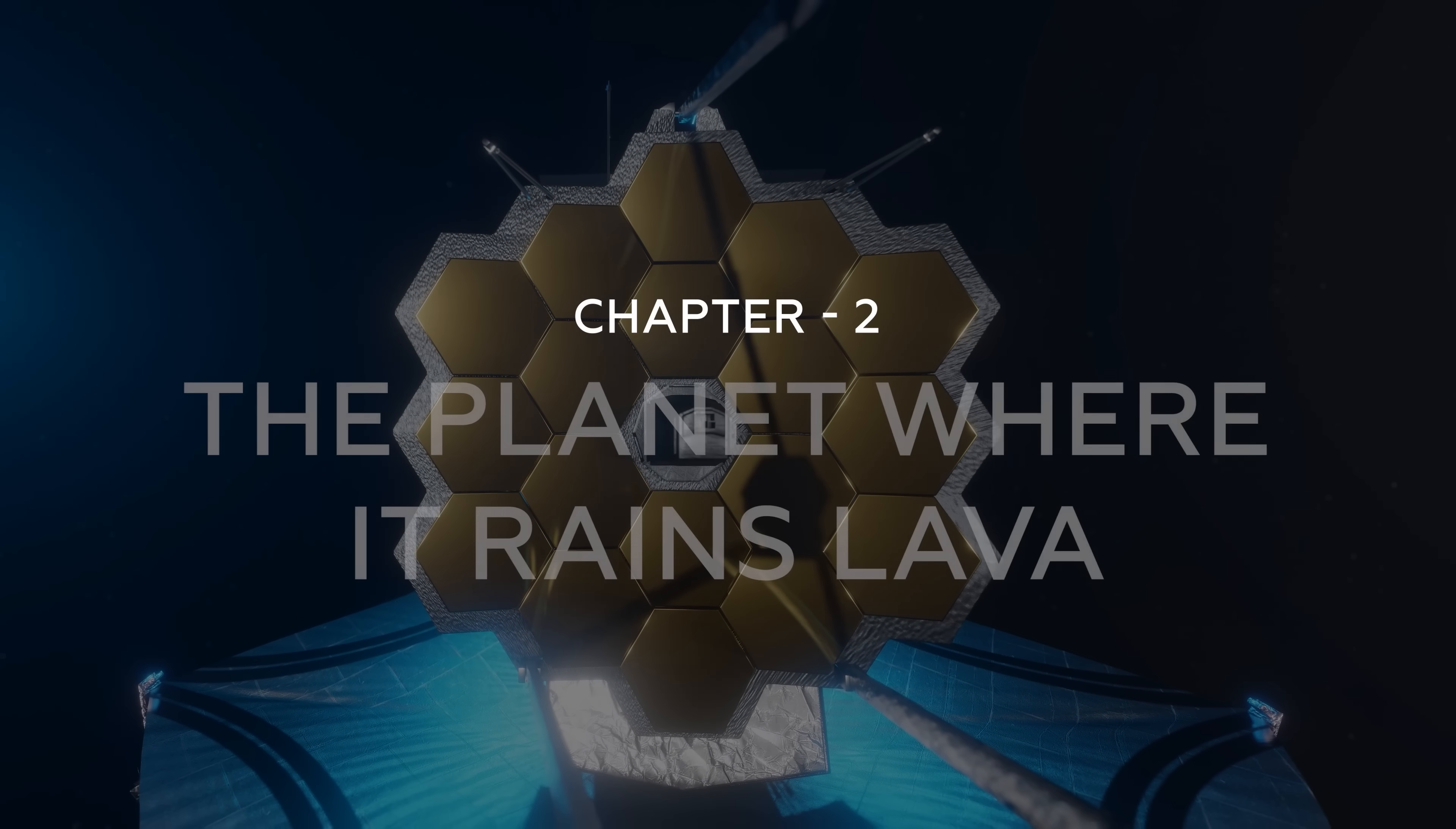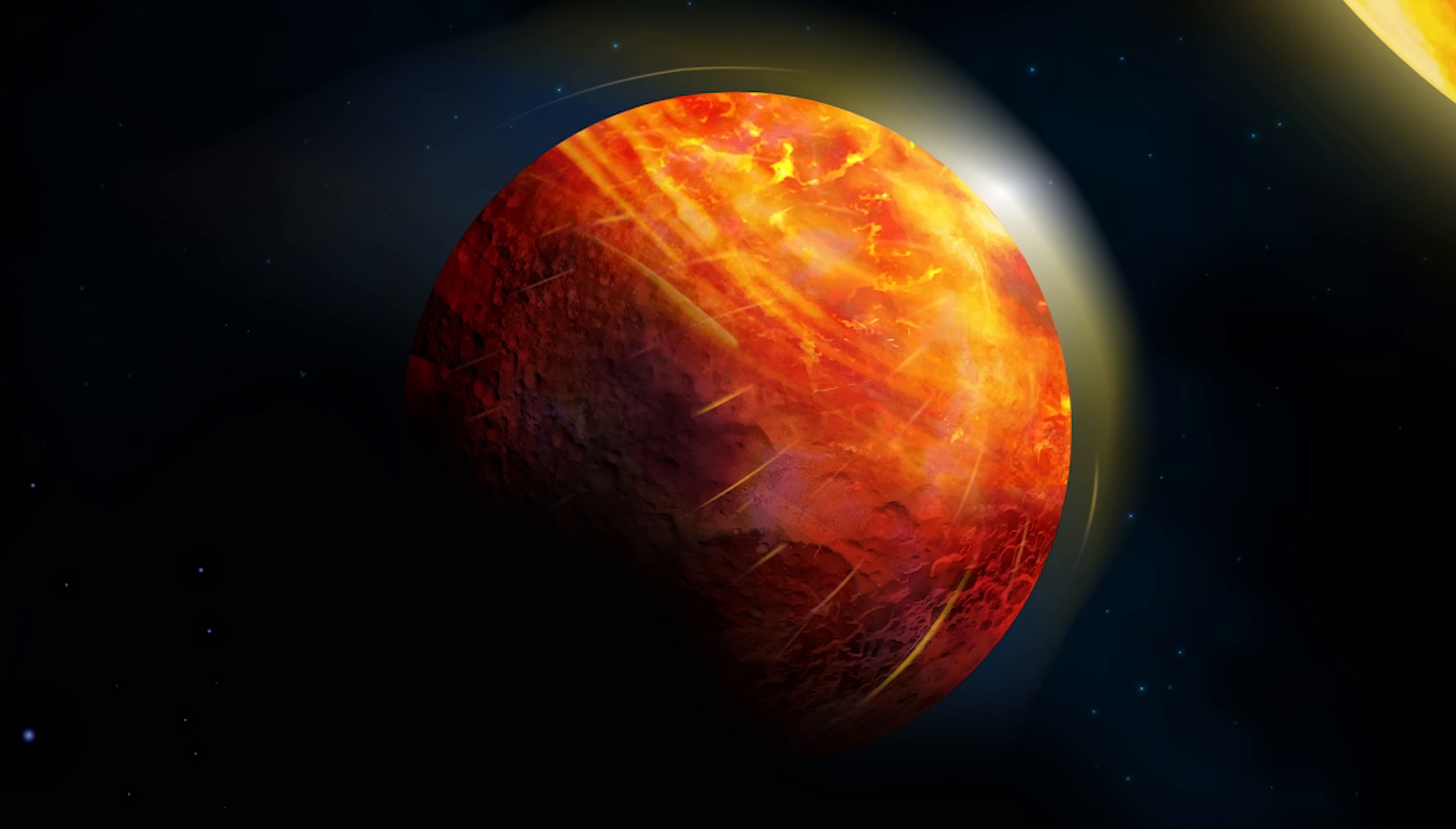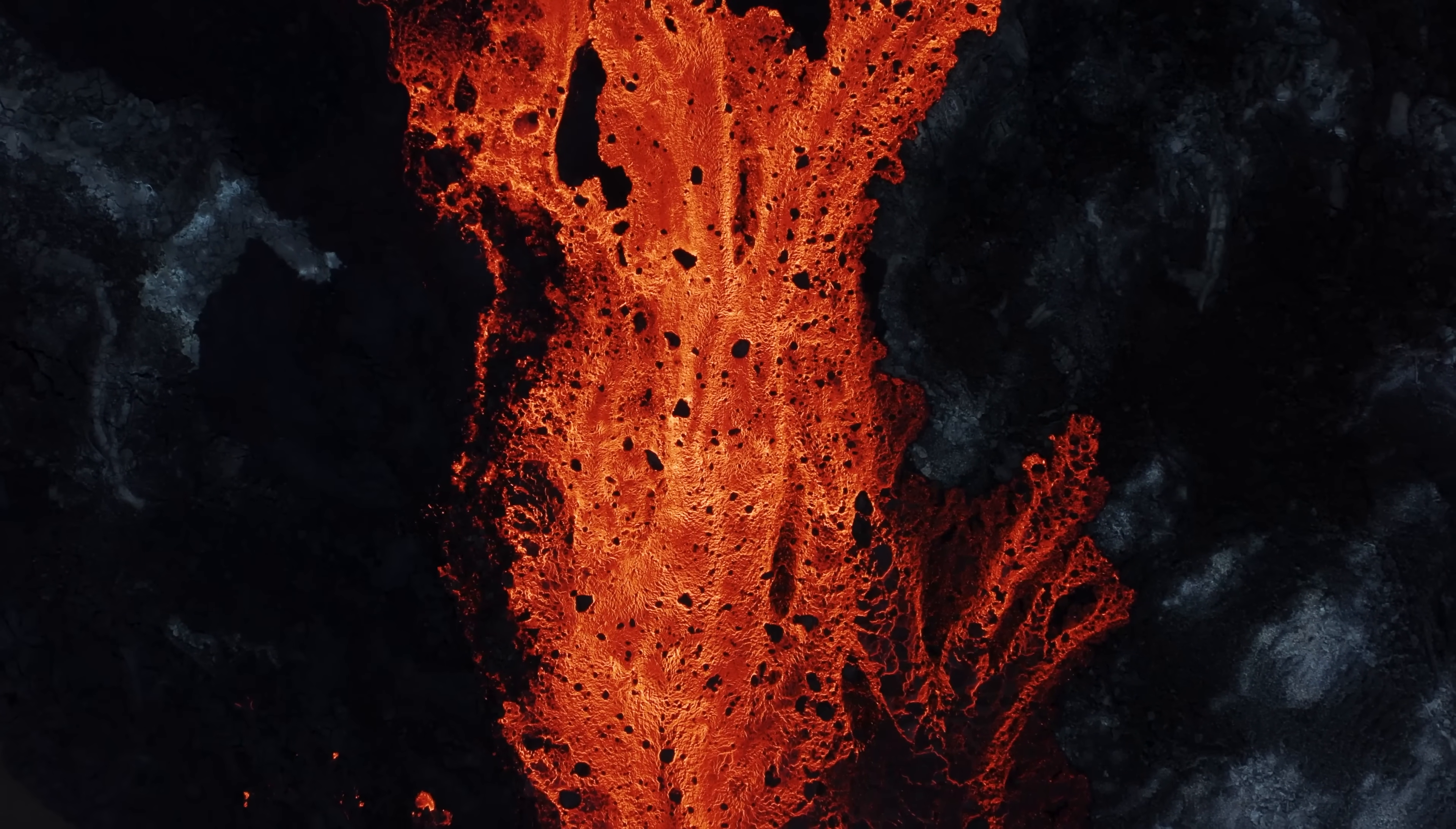Chapter 2. The Planet Where It Rains Lava. Imagine stepping outside on a planet where the temperature hits 2,500 degrees Celsius, hot enough to vaporize steel. The sky isn't blue, but a hazy orange from vaporized rock floating in the atmosphere. And when night falls, the clouds literally rain lava. This isn't a science fiction horror movie. It's K2-141b, a real planet 200 light-years away that Webb revealed in terrifying detail. When Webb turned its infrared gaze toward this super-Earth, scientists expected to find what most lava worlds have: a molten surface and maybe some metallic vapor. What they actually saw rewrote the book on extreme planets.